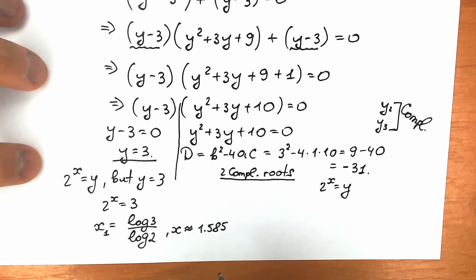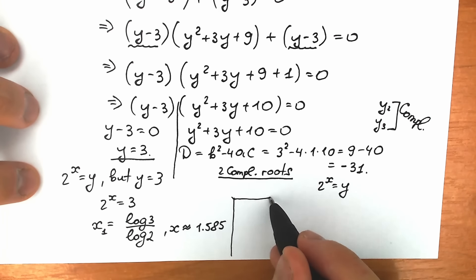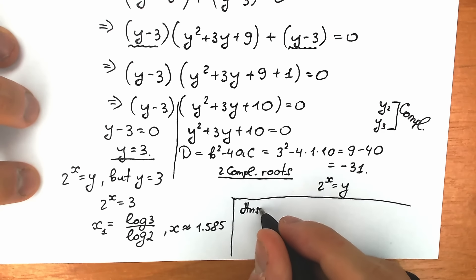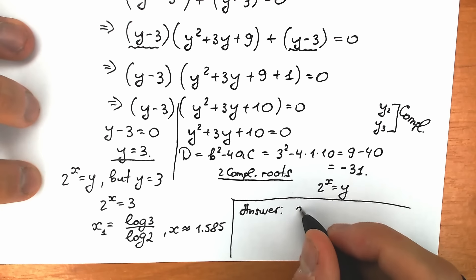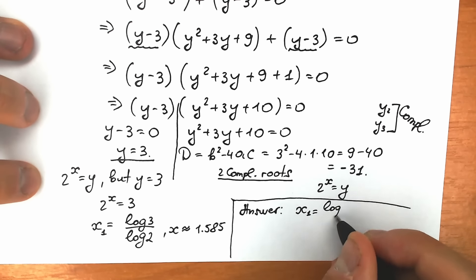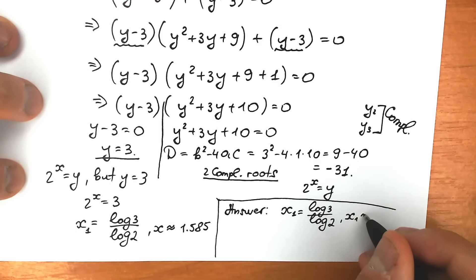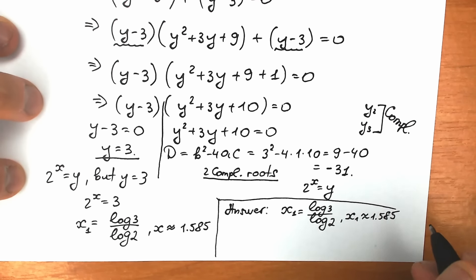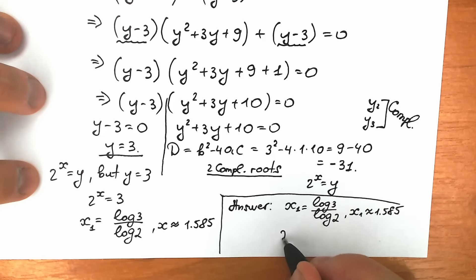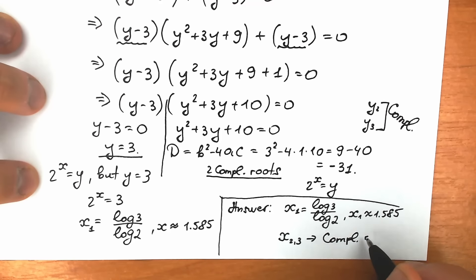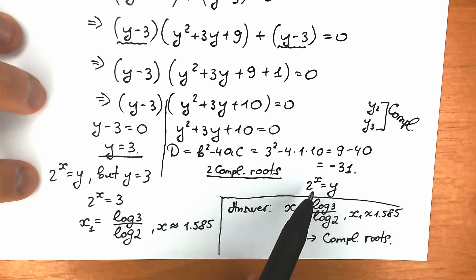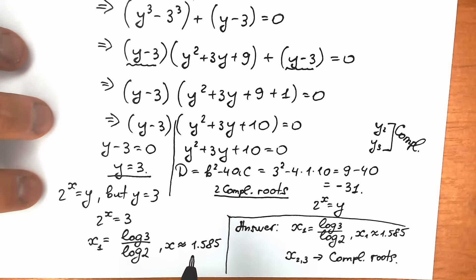This is our approximate answer. Let's write our final answer: x₁ equals log 3 over log 2, and approximately x₁ ≈ 1.585. It's important to note that x₂ and x₃ are complex roots. If your teacher requires you to find these complex roots, you can plug those y values into the exponential equation. But mostly teachers are happy with this real number root, and this is absolutely enough.